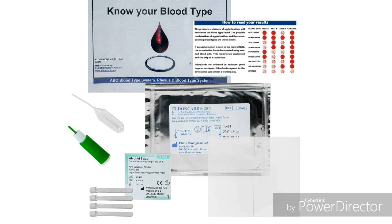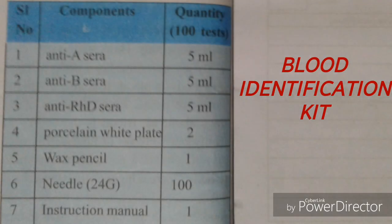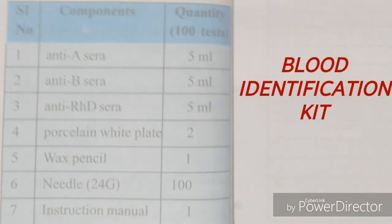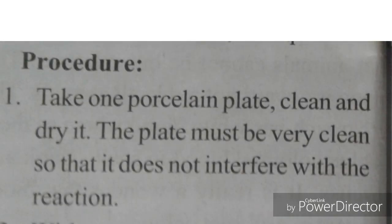The components of the blood identification kit are: anti-A sera (5 ml), anti-B sera (5 ml), anti-RHD sera (5 ml), porcelain white plates (2), wax pencil (1), and needles (100 in number) along with an instruction manual. When doing more number of tests, more disposable needles are required — disposable needles must be used.